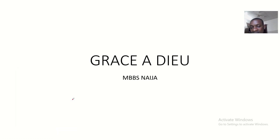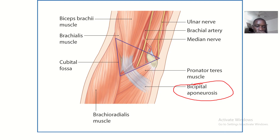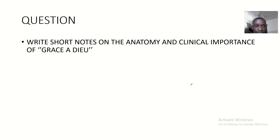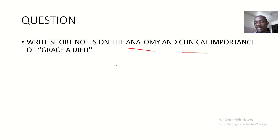We'll be talking about the grace adieu, which is simply the bicepital aponeurosis. The bicepital aponeurosis is also known as the grace adieu. Our focus or question is a short note on the anatomy and clinical importance of the grace adieu, also known as the bicepital aponeurosis.